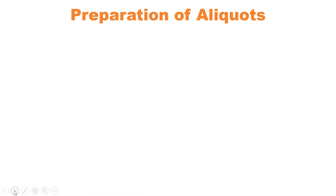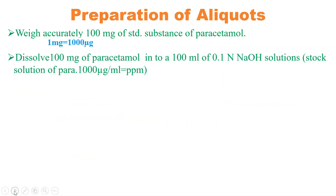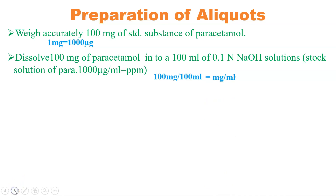Firstly we will see the procedure to prepare an aliquot. Weigh accurately 100 milligram of standard substance of paracetamol. We need to know the relationship: one milligram is equivalent to thousand microgram. Dissolve 100 milligram of paracetamol in 1000 ml of 0.1 normal HCl solution, so the stock solution of paracetamol will be 1000 ppm or 1000 microgram per ml solution.